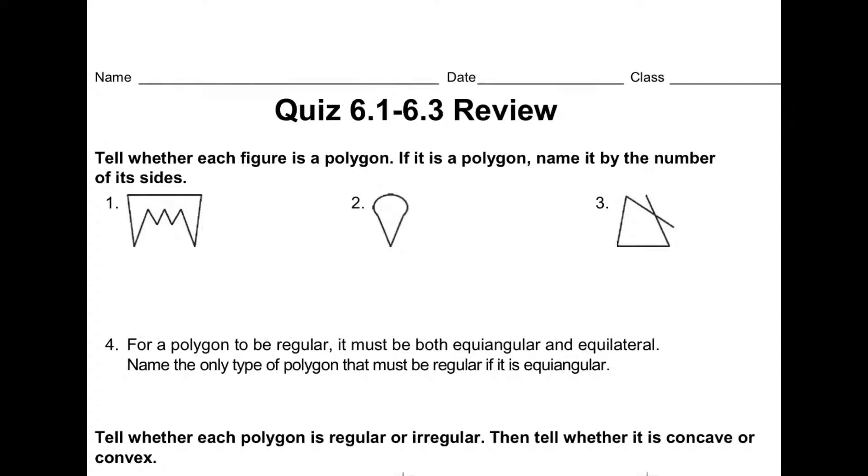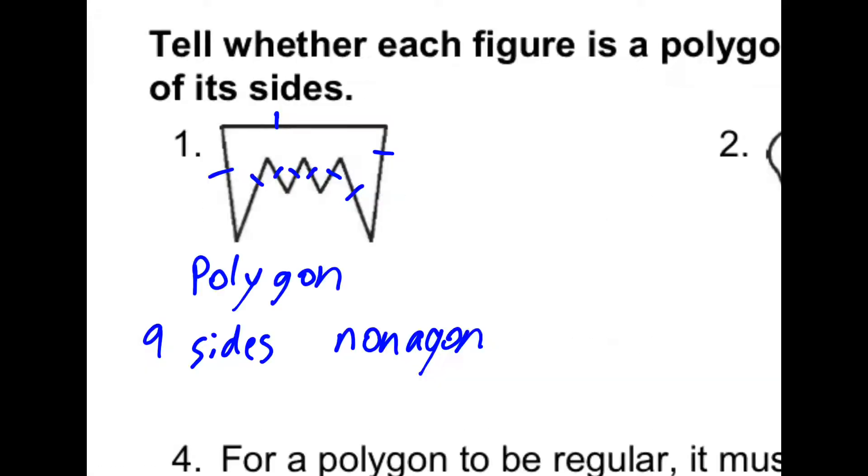This video goes over the review for the quiz on 6.1 to 6.3. Number one has nine sides. This is a polygon. We call this a nonagon.